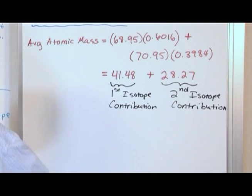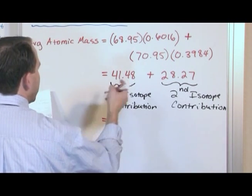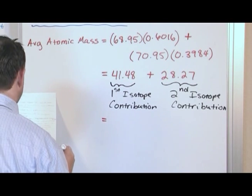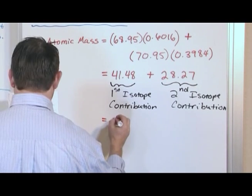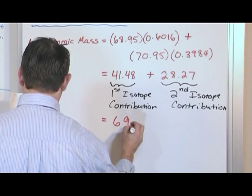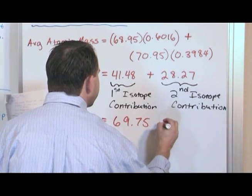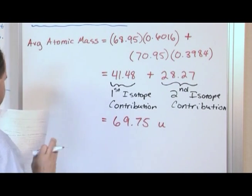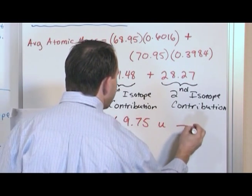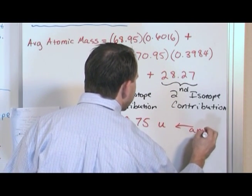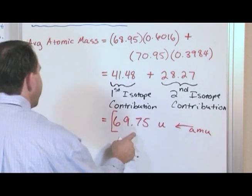We'll come back, and we'll just talk about the final answer. So we do 41.48 plus 28.27. We'll get 69.75. What unit are we working in? Working in units of U, atomic mass unit. When you see a U there, it's atomic mass unit. So I'll put a little arrow there. This means AMU. So we'll circle this. This number, if you look up gallium, which is Ga on the periodic table,